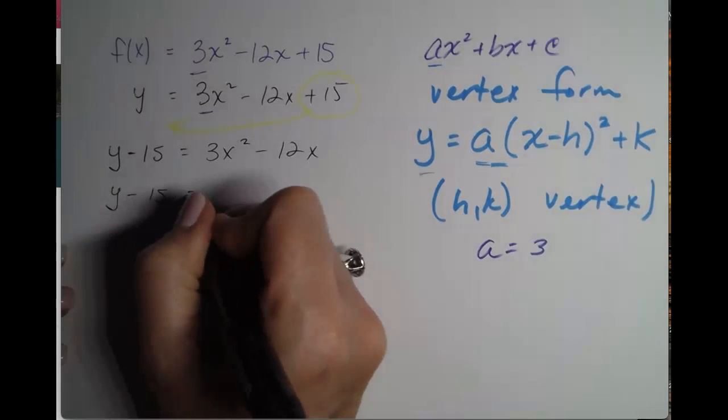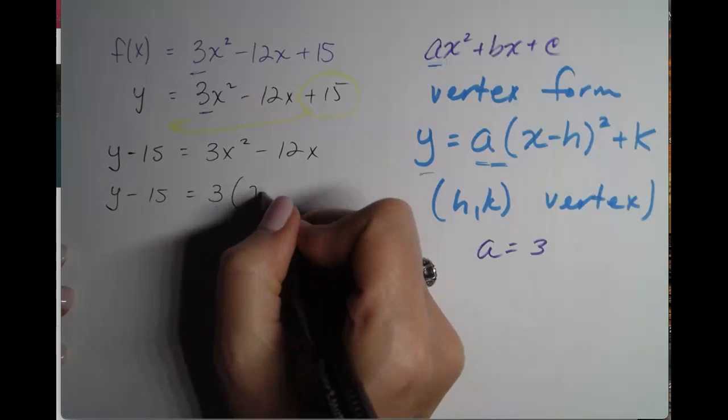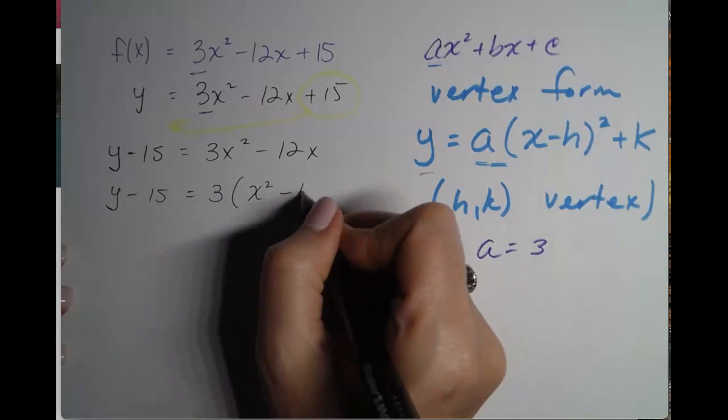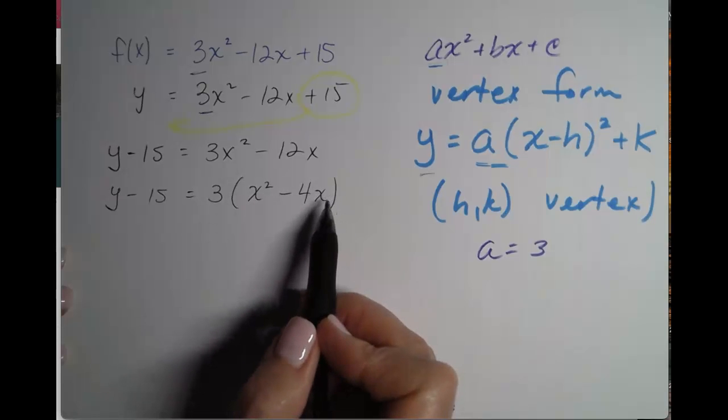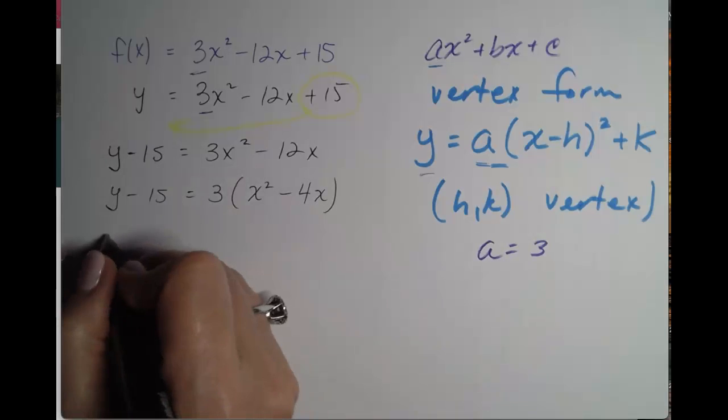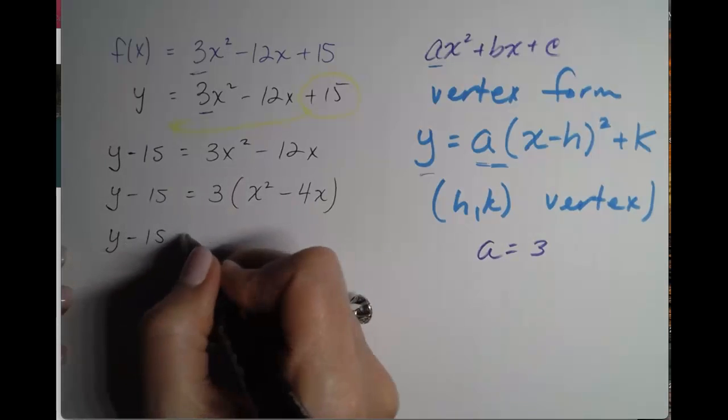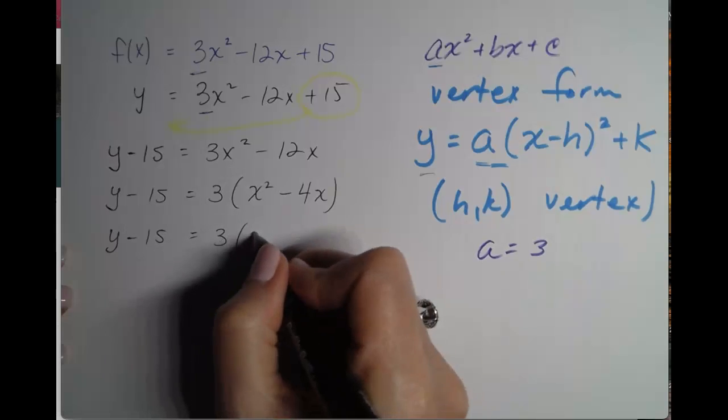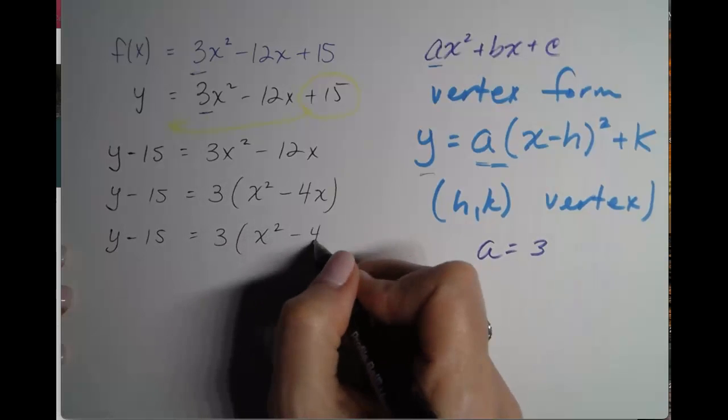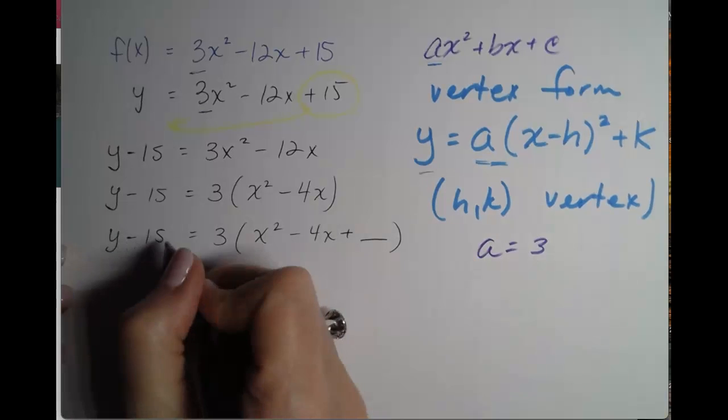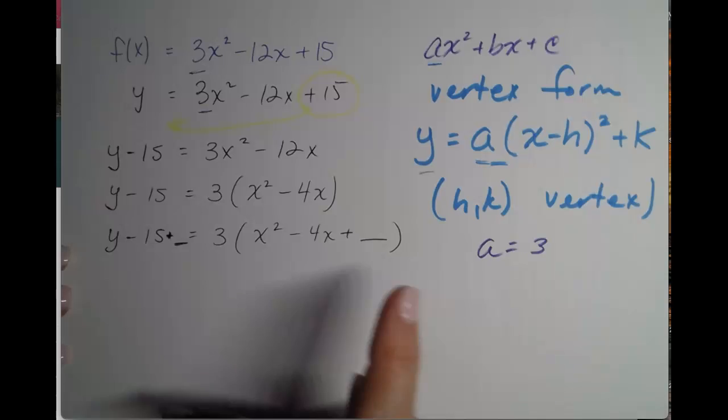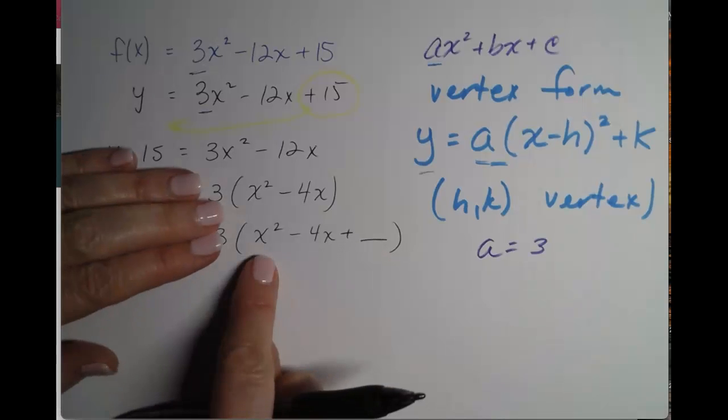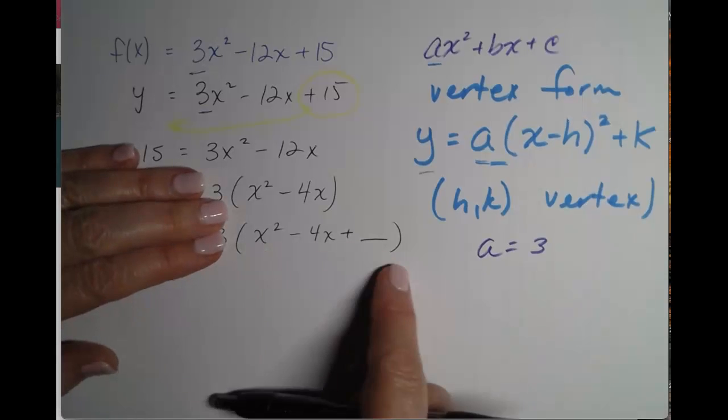So y minus 15 equals 3 times x squared minus 4x. So now, inside the parentheses, we're setting ourselves up to complete the square. So let's do that. y minus 15 equals 3 times x squared minus 4x plus a blank. And I should also put a plus a blank on the other side, because we're going to complete the square, but focus on what is inside of the parentheses.